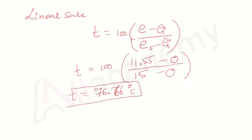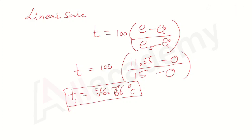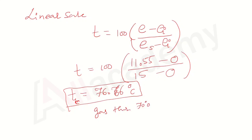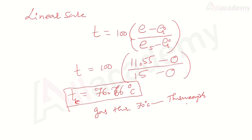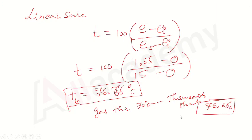This temperature means when the gas thermometer shows 70°C, the thermocouple is showing 76.66°C. This is our final answer.